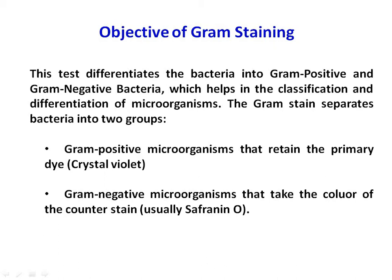The gram stain separates bacteria into two groups: gram positive bacteria that retain the primary dye, that is crystal violet, and gram negative bacteria that take the color of the counter stain, which is safranin. In 1884, Christian Gram devised this differential staining procedure to differentiate between these two kinds of bacteria.